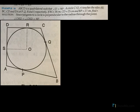ABCD is a quadrilateral such that angle D is 90. So here we have ABCD, a quadrilateral with angle D equal to 90.